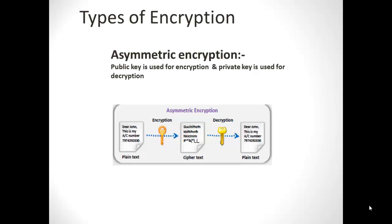Symmetric encryption is not a good idea for tasks involving a sender and receiver, because it uses a single secret key that carries risk when shared over the internet. To overcome this problem, asymmetric encryption comes into action, using a two-key combination: a public key and a private key. The public key is only used to encrypt the content and can be shared freely, while the private key is kept secret and used for decryption.